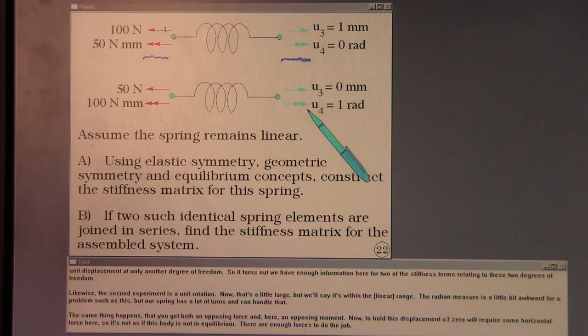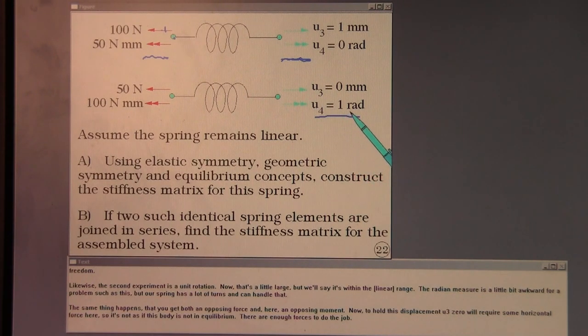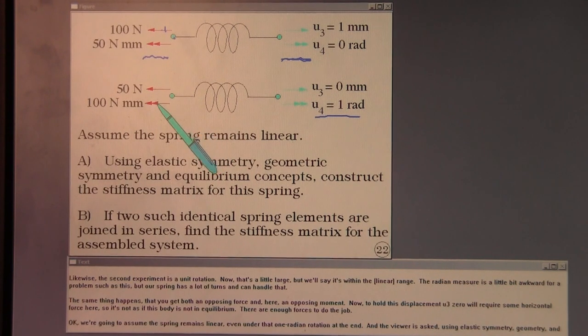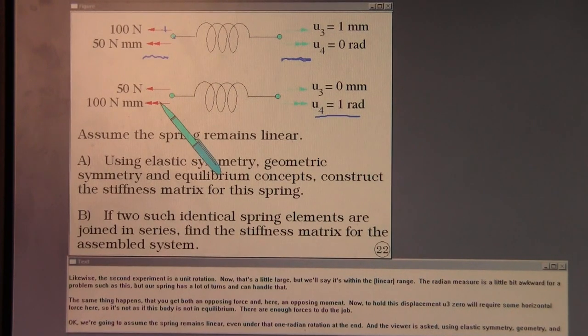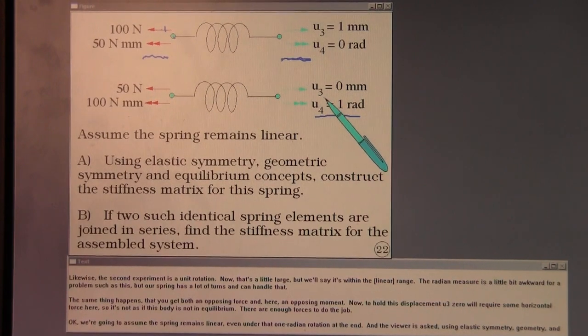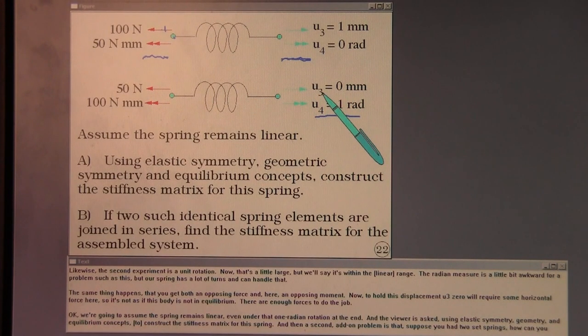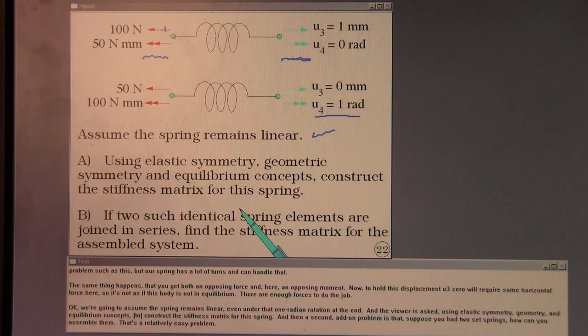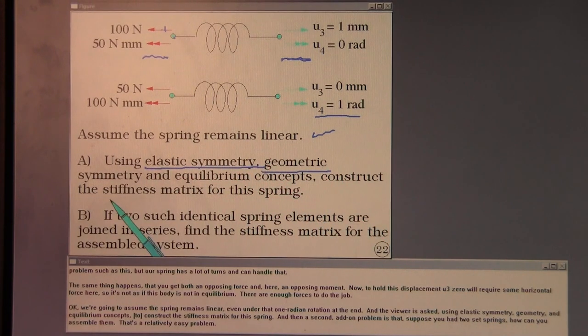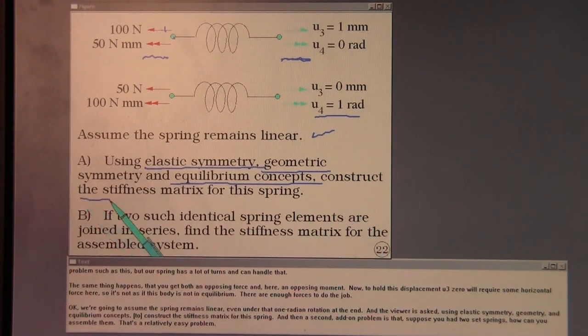Likewise, the second experiment is a unit rotation. Now, that's a little large but we'll say it's within the range. The radian measure is a little bit awkward for a problem such as this but our spring is, maybe it's got a lot of turns and can handle that. And the same thing happens that you get both an opposing force and here an opposing moment. Now, to hold this displacement U3=0 will require some horizontal force here. So it's not as if this body is not in equilibrium. There are enough forces to do the job. Okay, we're going to assume the spring remains linear even under that one radian rotation at the end. And the viewer is asked, using elastic symmetry, geometry, and equilibrium concepts, construct the stiffness matrix for this spring.